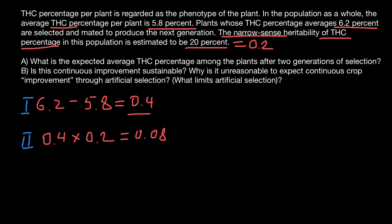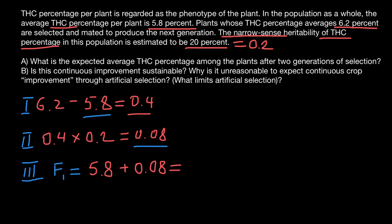What does this number represent? It is how much improvement we expect in the F1 generation. Step number three: the mean of the base population is 5.8%, plus this difference of 0.08. So in the F1 generation, we expect the mean to be 5.8% plus 0.08, which gives us 5.88% THC content in plants.